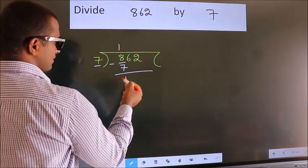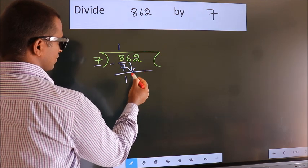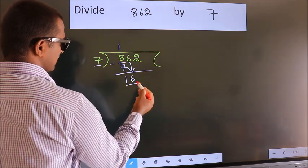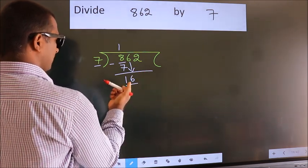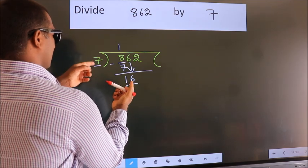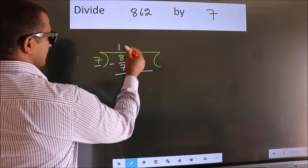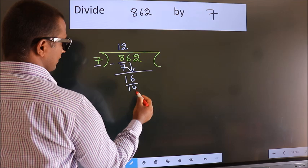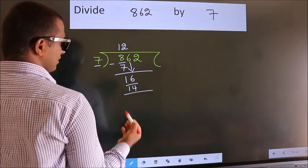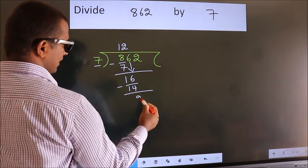After this, bring down the beside number. So 6 down, so 16. A number close to 16 in the 7 table is 7 twos, 14. Now we subtract. We get 2.